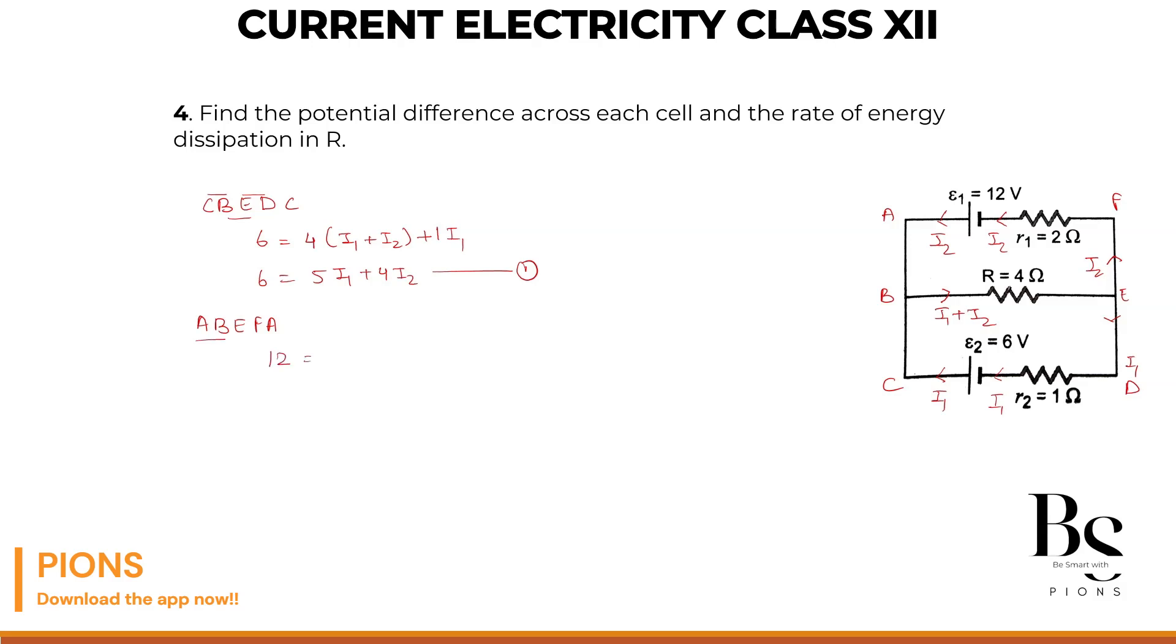A to B nothing. Is there any battery in this loop? Yes, 12 volts. B to E has 4 ohm resistor with current I1 plus I2. E to F nothing. F to A has 2 ohm resistor with current I2. So it will be 12 equals 4I1 plus 6I2.